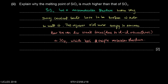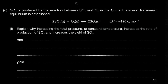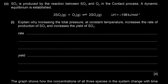SO₃ is produced by the reaction between SO₂ and O₂ in the contact process, which is used to manufacture sulfuric acid. A dynamic equilibrium is established. The question asks: explain why increasing the total pressure at constant temperature increases both the rate of production of SO₃ and the yield of SO₃.